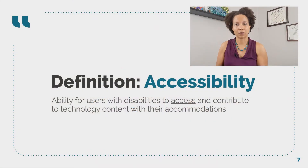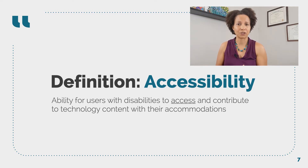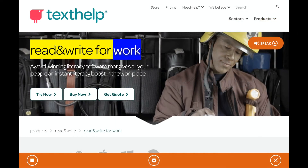Having explored assistive technology, let's turn now to the definition of accessibility. It is the ability for users with disabilities to access and contribute to technology content with their accommodations — that is, people can use the OS settings, software, and hardware needed to engage with their computing devices. Unfortunately, a lot of web technology is inaccessible, meaning people attempting to use their adjustments and AT cannot properly access and contribute to content. Thinking back to the Texthelp website, the site was able to read aloud and highlight content that was text. If the content had been an image of text, the software would not have been able to read it. Yet we find that people often share large blocks of text as images, particularly in social media, leaving out people who rely on text-to-speech features or need to make visual adjustments like the invert color setting.